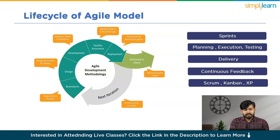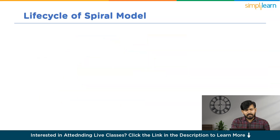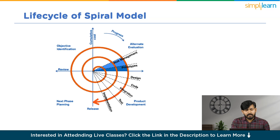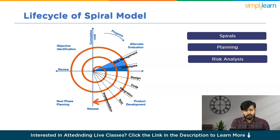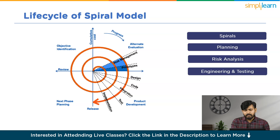The Spiral Model lifecycle consists of multiple iterations or spirals, each containing phases such as planning, risk analysis, engineering, testing and evaluation. This iterative approach accommodates changes and enhancements as the project progresses. The model concludes when the software meets predefined objectives and satisfies stakeholders' requirements.